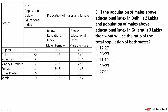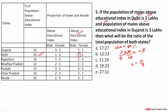The next question: male population above the educational index in Delhi is 2 lakhs. Delhi's below index is 20 percent, so above is 80 percent. Above is divided 3:4 for males, so 3/4 × 80% × x = 2 lakhs. Solving: x (Delhi's total population) = 10/3 lakhs.